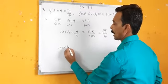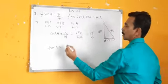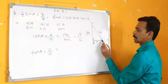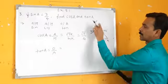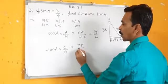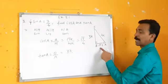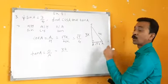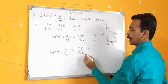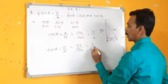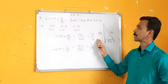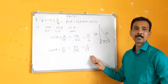Then tan A. Tan is opposite upon adjacent — this is reference angle A. What is opposite? BC. What is BC? 3K. Upon adjacent, what is adjacent? AB, which is root 7K. K and K get cancelled. So tan A equals 3 upon root 7. This is cos A and this is tan A.